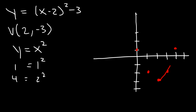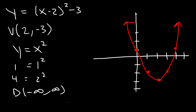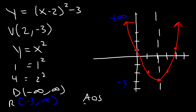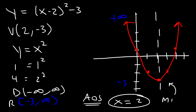Now we can graph it. The domain is all real numbers, from negative infinity to infinity. The lowest y value is negative 3 and the highest is infinity, so the range is from negative 3 to infinity, including negative 3. The axis of symmetry is the x-coordinate of the vertex, which is x equals 2. And because it opens upward, we have a minimum value of negative 3.